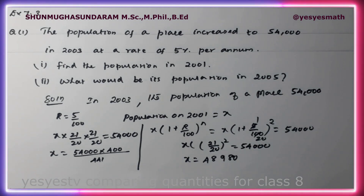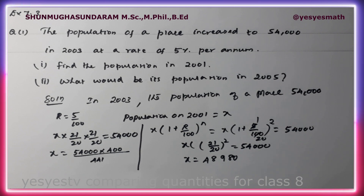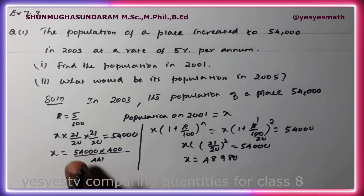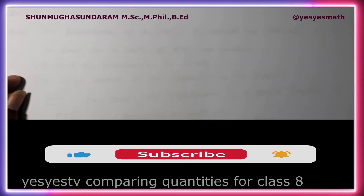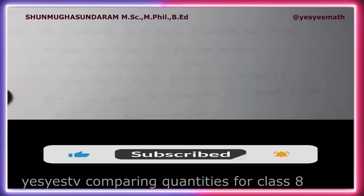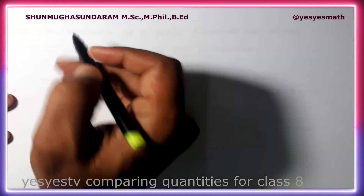Approximately 48,979.5, so x is approximately 48,980. Now let's find what the population will be in 2005.